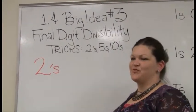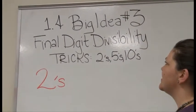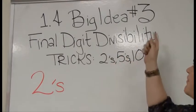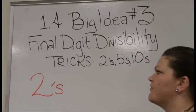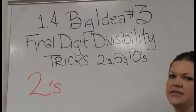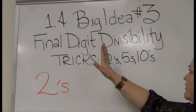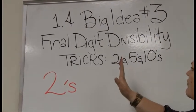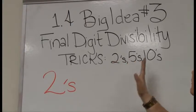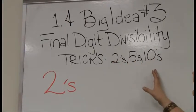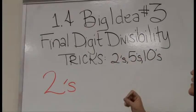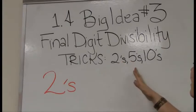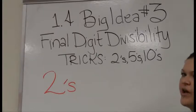I promised you tricks to test for divisibility, and in this video we've got big idea three. We're going to look at what I call the final digit divisibility tricks. I've got a ton of tricks, but these are the easiest, so we're going to look at this first. These tricks will tell us if 2, 5, and 10 are factors — we're going to use final digit divisibility tricks to look for factors of 2, 5, or 10.